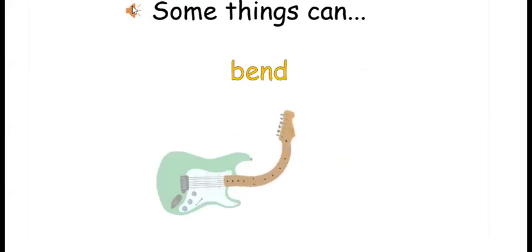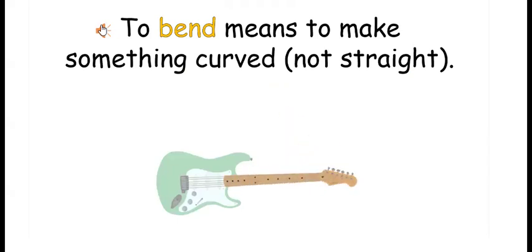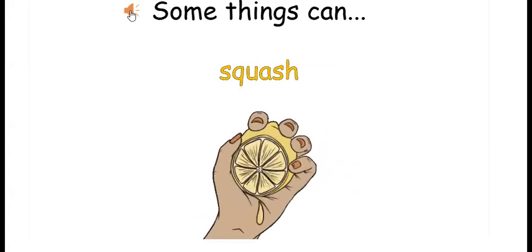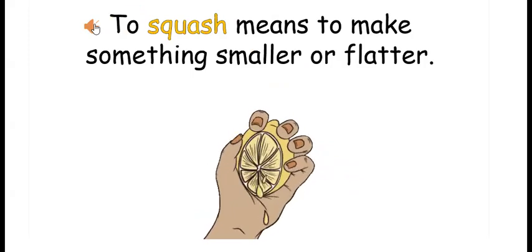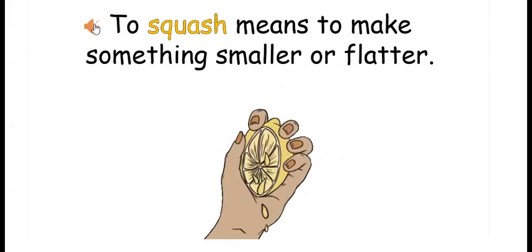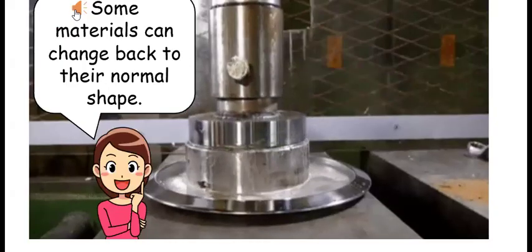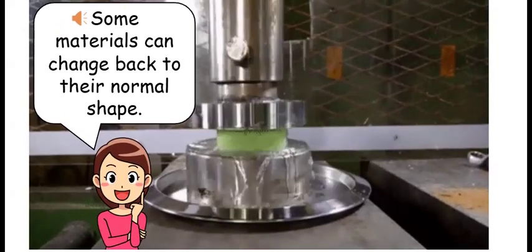Some things can bend. To bend means to make something curved, not straight. Some things can squash. To squash means to make something smaller or flatter.